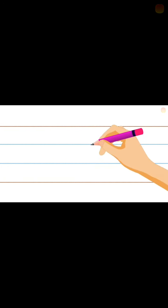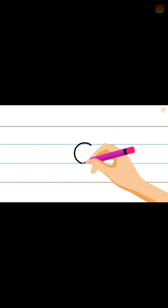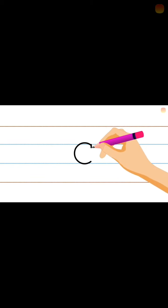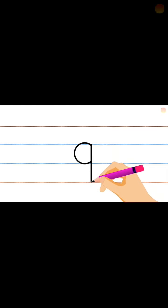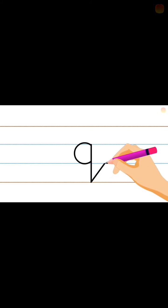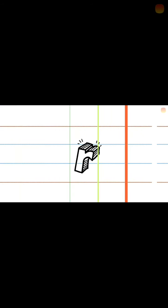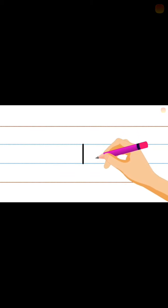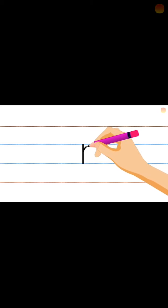Next, q. Start from the middle line — small c — and go to the middle standing line. Go to the bottom. Left curve, slanting line. Next, q after r. How to write? Start from the middle line, standing to bottom, then small curve at the middle. Finished.